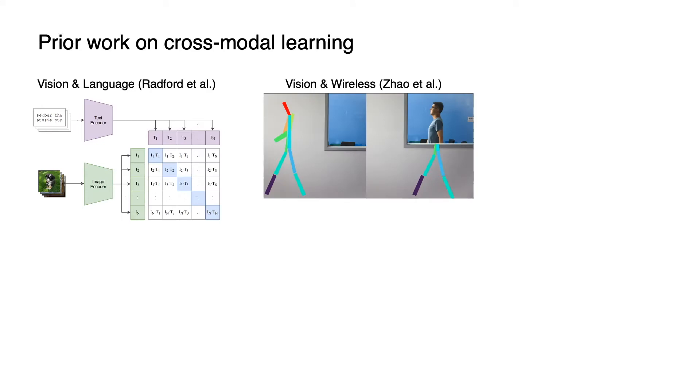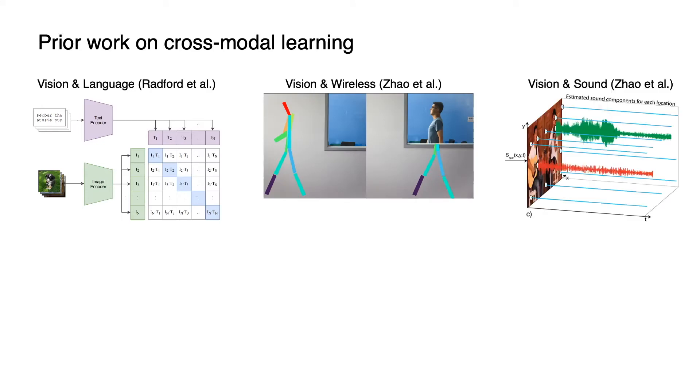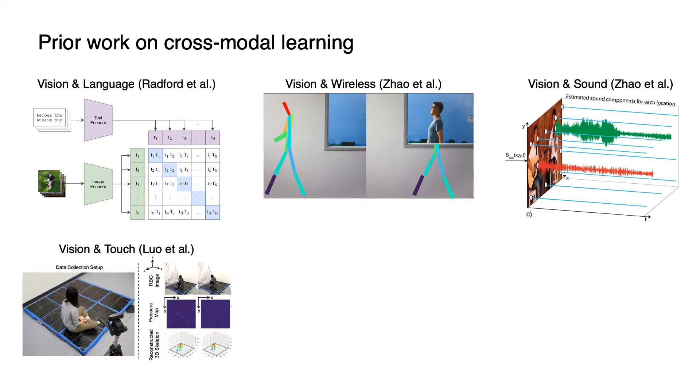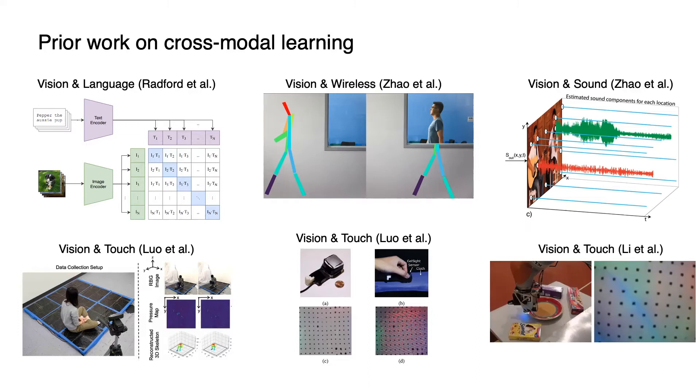We are not the first to use such a cross-modal learning framework, and prior works have applied similar approaches in a wide range of multi-modal systems. For example, people have investigated the relationships between vision and language, vision and wireless signals, and vision and sound. There is also prior work that builds cross-modal learning systems for vision and touch. Luo et al. used vision to collect human pose labels to enable a tactile carpet to estimate human pose purely from tactile signals. Luo et al. and Li et al. investigated cross-modal prediction tasks between vision and tactile images collected using GelSight.